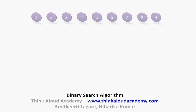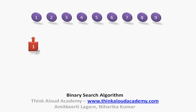For binary search, let's assume we have a set of elements from 1 to 9. We are trying to search for element 1 in this list. The binary search algorithm takes the middle element every time and searches whether it matches the element we are trying to find. The middle element in this case happens to be 5.